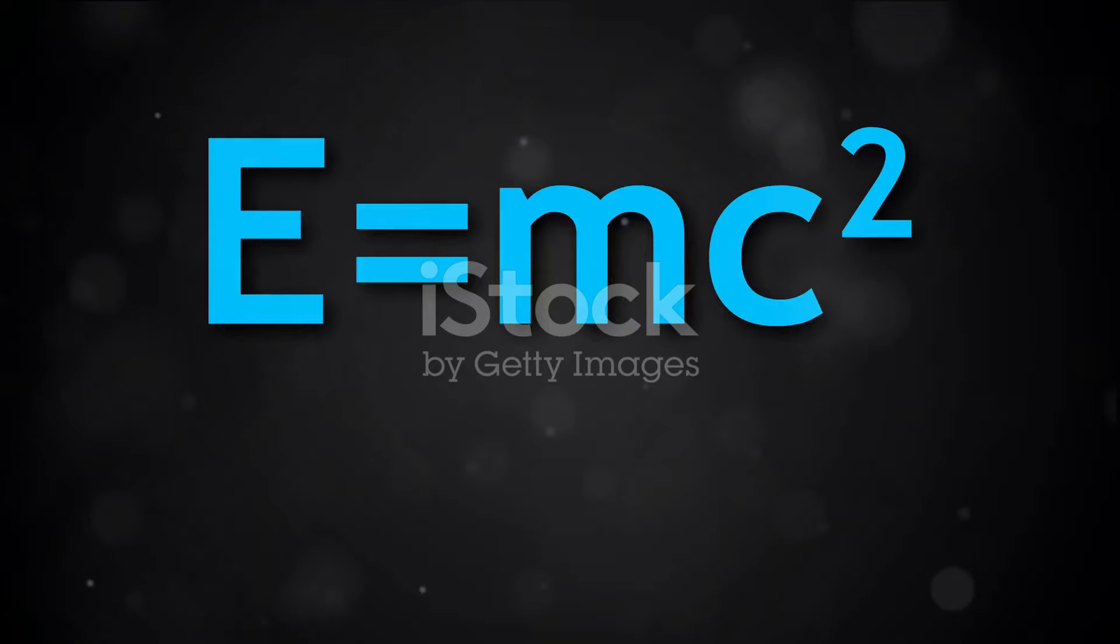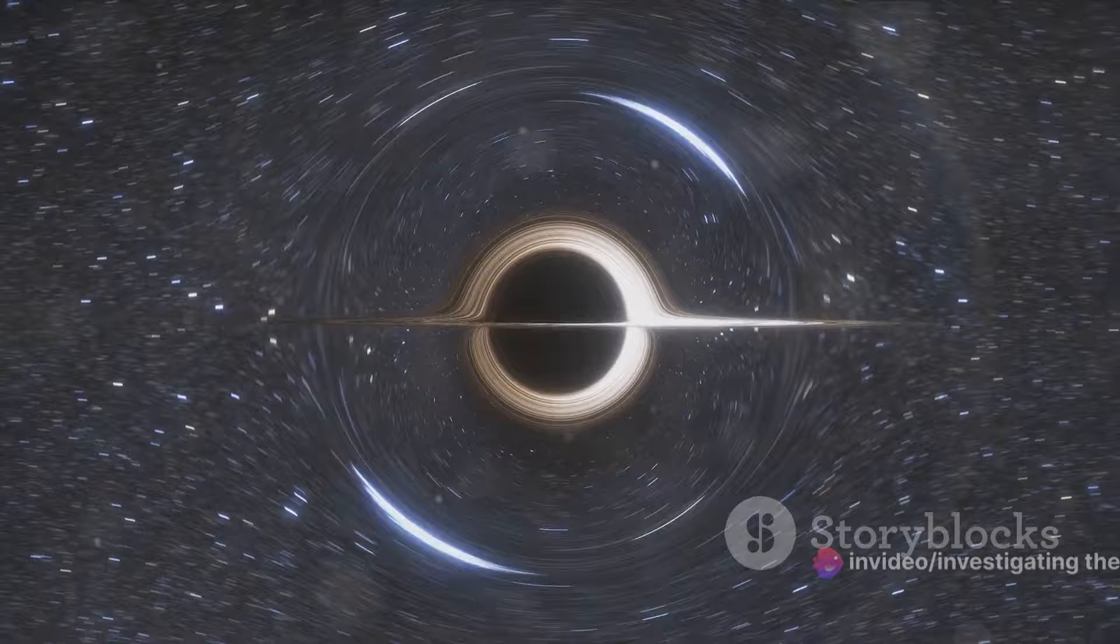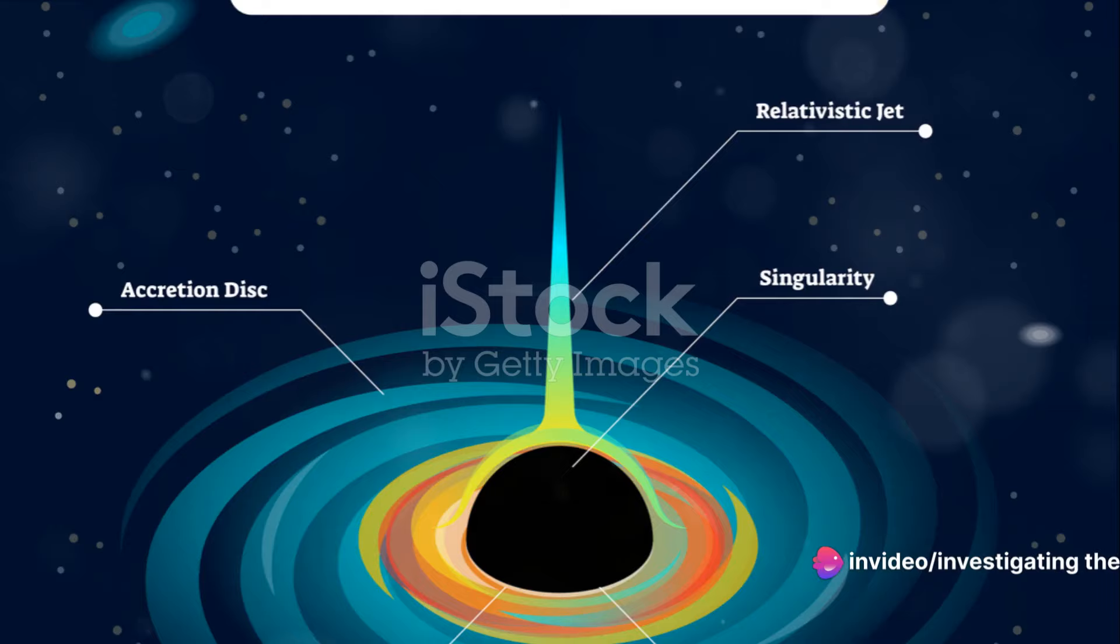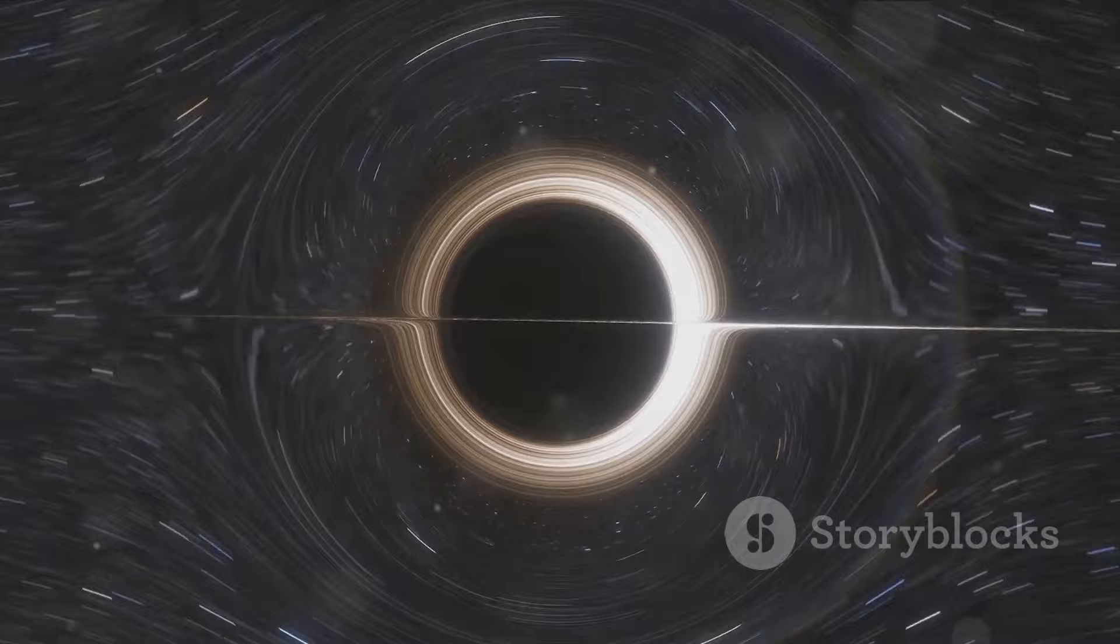But how does this lead to a black hole evaporating? Well, it's all about energy and mass. You might recall Einstein's famous equation, E equals mc squared, which tells us that energy and mass are interrelated. When a black hole loses mass due to Hawking radiation, it's essentially losing energy. Over an extremely long time frame, this process could, in theory, cause a black hole to lose enough mass and energy that it completely evaporates.